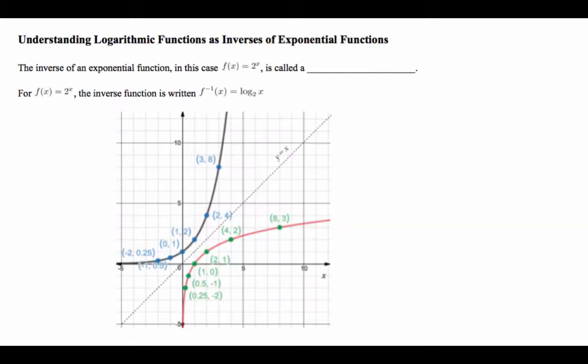Understanding logarithmic function as inverse of exponential function. So we're going to start with an example. The inverse of an exponential function, in this case f(x) = 2^x, is called a logarithmic function. So in this particular case, we write that as f inverse of x is log base 2 of x. So you have base 2 to the x, that's called exponential function, and the inverse is to simply write log subscript base 2 of x.